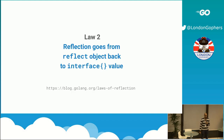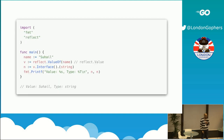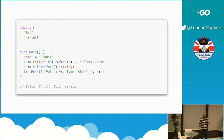Law number two: reflection goes back from the reflect object back to an interface value — essentially it's the inverse of law one. In this particular example, we can coerce a name into a reflect object. At that point, v is going to be a reflect.Value, and then we can coerce it back by calling the Interface method to get back a string.